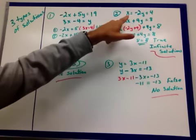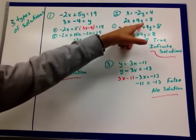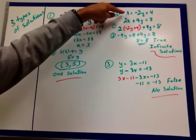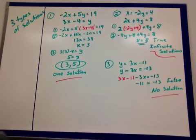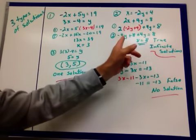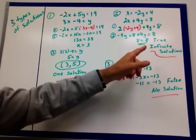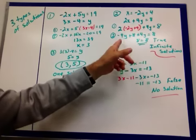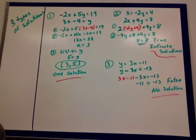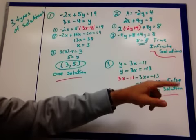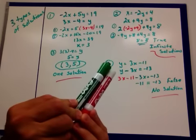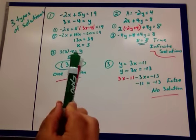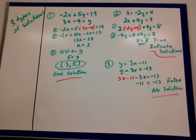Second example. x equals negative 2y plus 4, 2x plus 4y equals 8. I substitute into the x right here. So negative 2y plus 4, that was my x. I distribute. I get negative 4y plus 8 plus that 4y equals 8. My 4y's cancel out and I'm left with 8 equals 8. 8 equals 8 all the time. It's always true. That's a true statement. So that means I get infinite solutions. That's going to be a line graphed on top of a line.